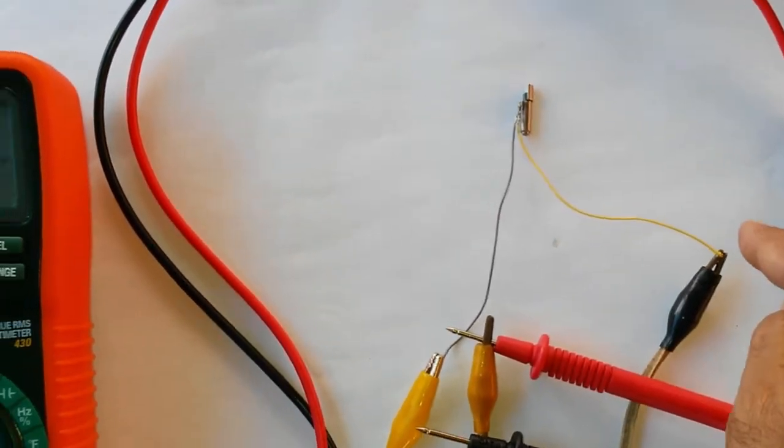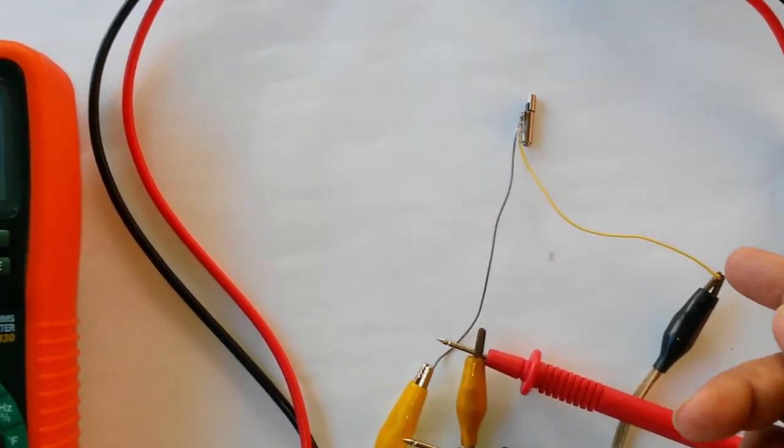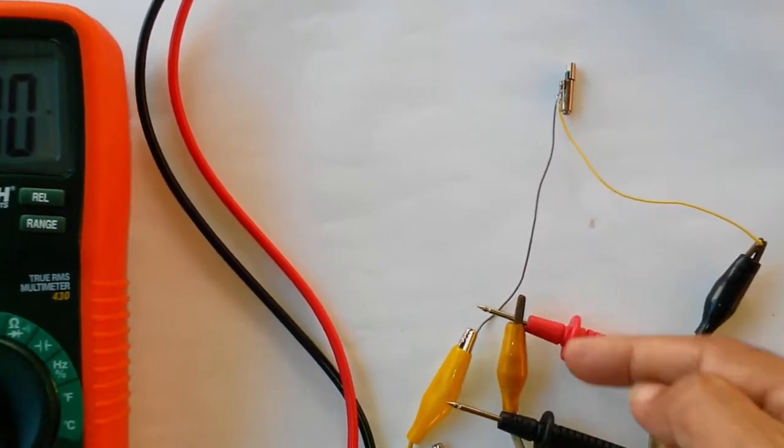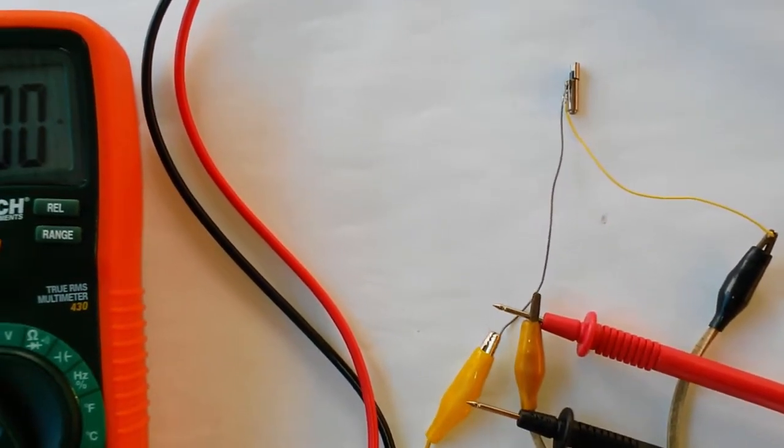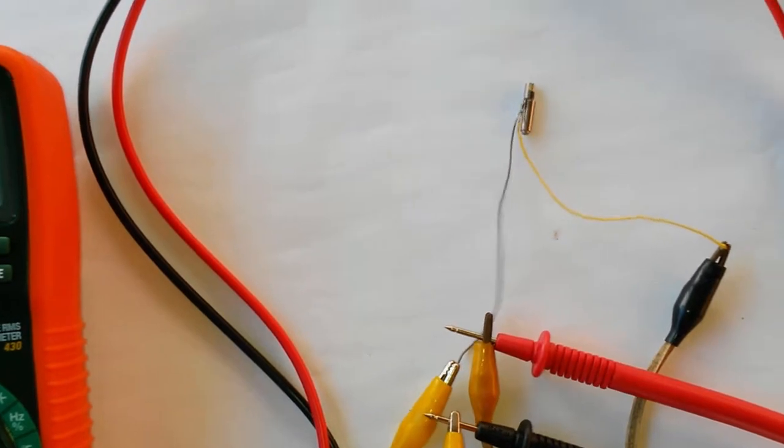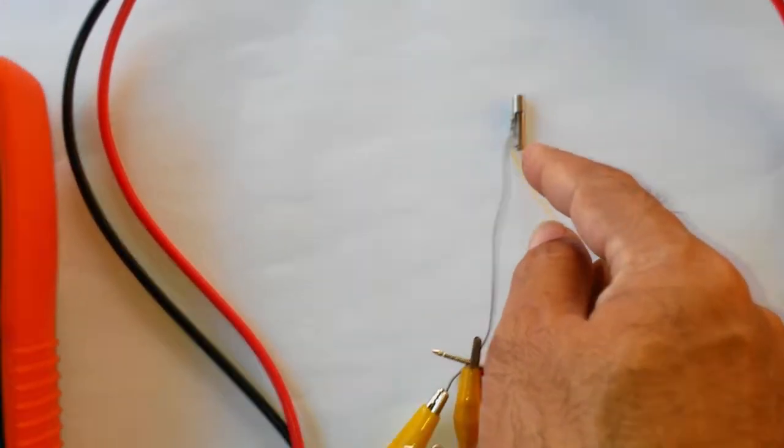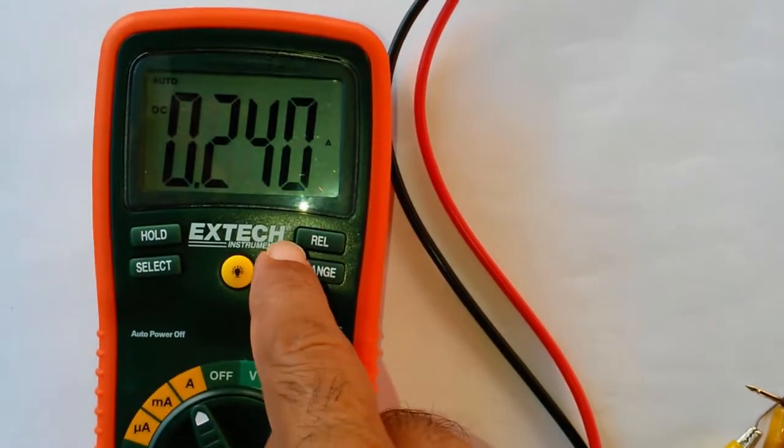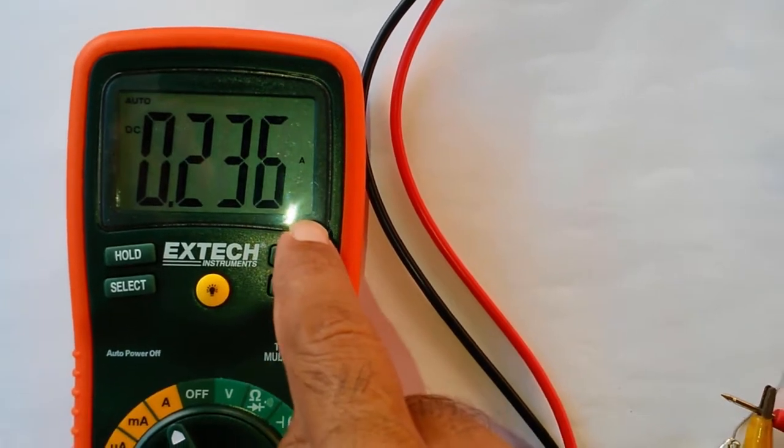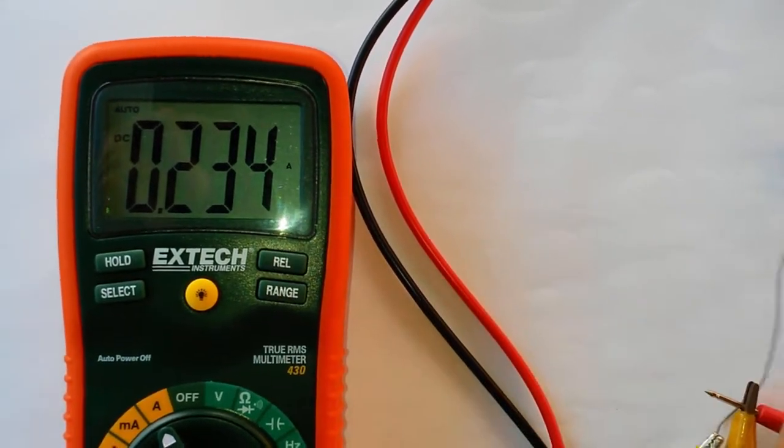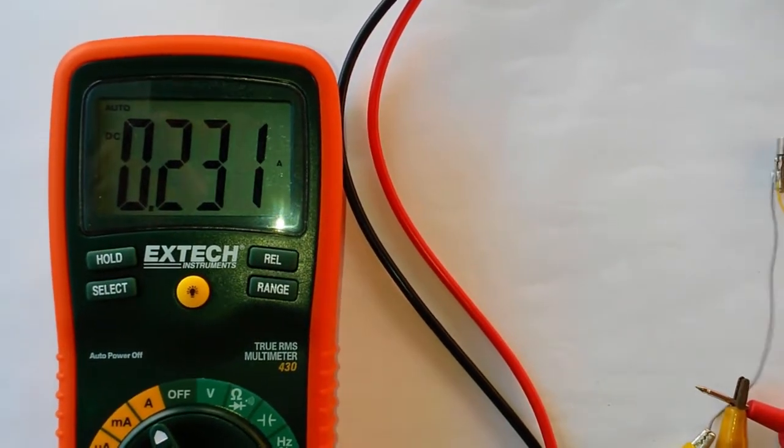So everything's set up now. Negative, positive, doesn't matter. Coming in, positive going through. So let's put it on, let's see. Right, it's jumping a lot. So it's on 240 milliamps and it's dropping because it's warming up and the resistance is increasing.